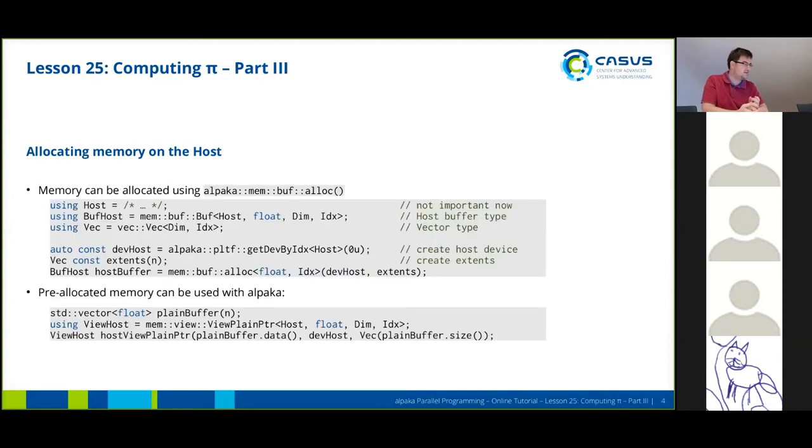Memory is allocated using the alpaca-membuf-alloc function. The first parameter is a type that is not important just yet, we will cover that tomorrow. Then we are defining our buffer type, which is specific to the host. In this case, we are using a float buffer and we pass in our dimensionality and index types. We also define a vector type.